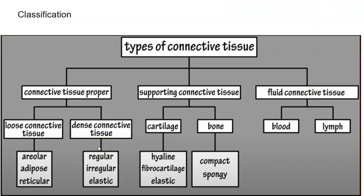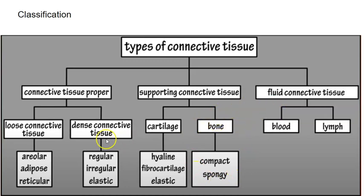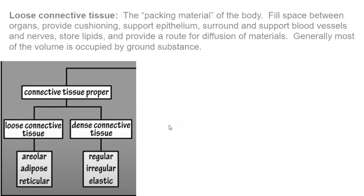There are many types of connective tissue, but we're going to focus on loose connective tissue, dense connective tissue, and cartilage. Even though bone, blood, and lymph are types of connective tissue, we'll save those for later when we specifically discuss bones and blood.